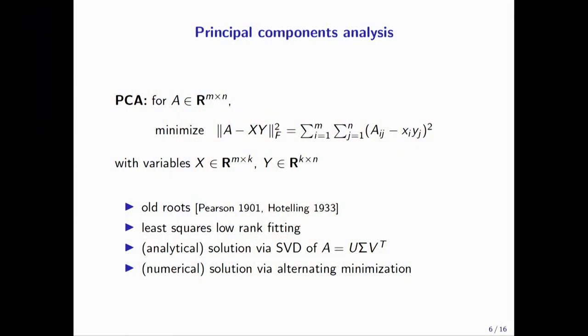For this talk and for the horrible messy data sets that you see every day, I want to tell you about a different way of solving this problem: alternating minimization. It's a super simple idea. Fix a guess for Y and minimize over X — that's a least squares problem, essentially linear regression. Then fix that guess for X and minimize over Y — again, linear regression. Keep going. Unless you were extraordinarily unlucky — measure zero in the sense of measure theory — that converges to the global optimum. So it gets the same answer as the singular value decomposition, and it's much easier to generalize.